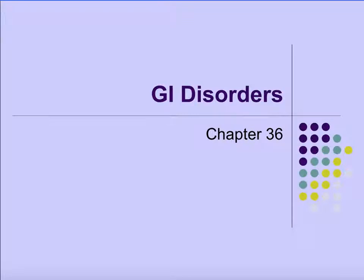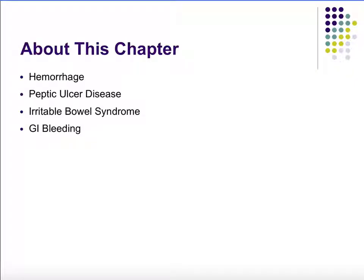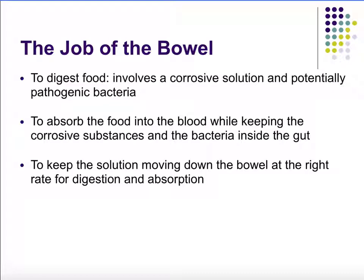Chapter 36: GI disorders. In this chapter we'll talk about hemorrhage of the GI tract, peptic ulcer disease, irritable bowel syndrome, and GI bleeding. The job of the bowel is to digest food, which involves corrosive solutions and potentially pathogenic bacteria. It also absorbs food into the blood while keeping corrosive substances and bacteria inside the gut, and it keeps everything moving at a proper rate so digestion can occur without becoming constipated.